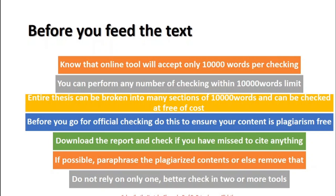If you find plagiarized material where you forgot to provide a citation, make sure you paraphrase that content and give a proper citation. If you cannot do that, just remove it. And very importantly, you should not rely on only one software — it is better to check with two or more tools so that you can compare results. When using a free software, if you feel it is not reliable, you can cross-verify by checking on two separate websites.